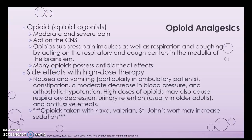Now we're going to talk about opioid analgesics. Opioid agonists assist — remember, agonist means helping with, antagonist means blocking. We use opioid analgesics for moderate and severe pain. They suppress pain impulses as well as respiratory and coughing by acting on the respiratory and cough centers in the medulla of the brainstem. Many opioids also possess anti-diarrheal effects. There is actually one called Lomotil that we use for patients with chronic diarrhea, though constipation is a common side effect for patients on opioids.